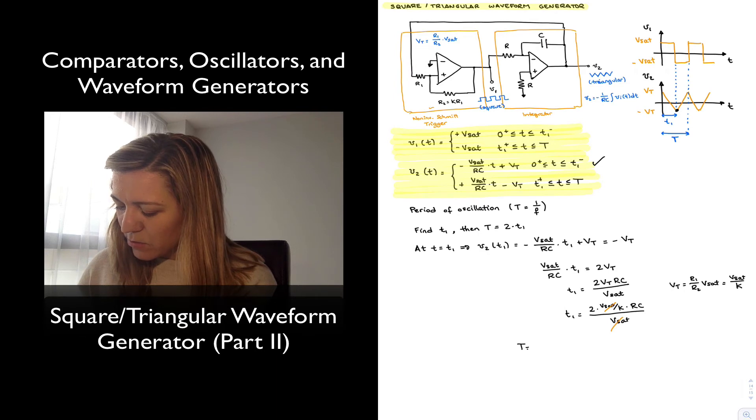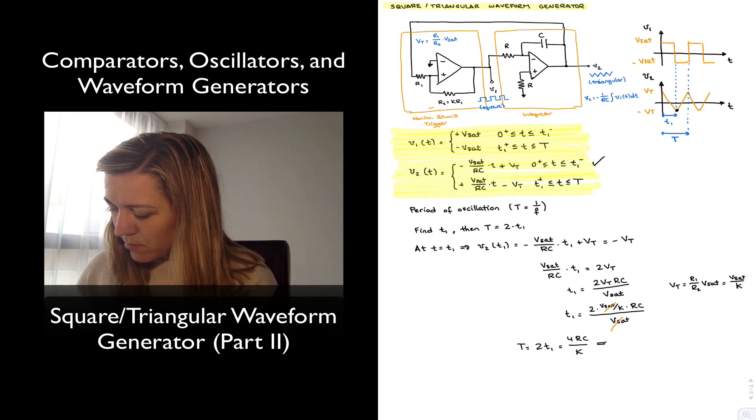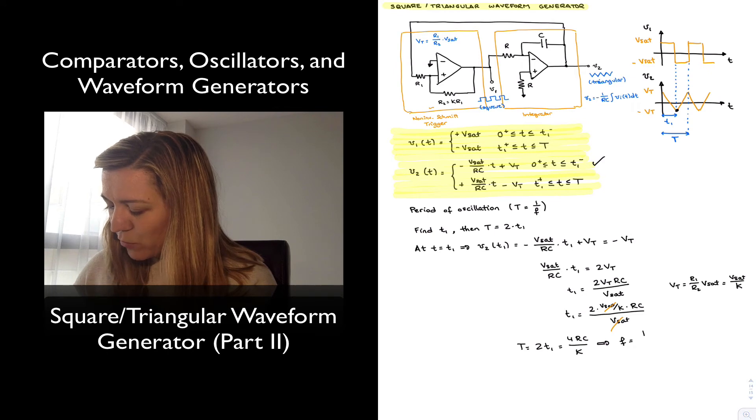My period then is equal to 2 times T1, so it's 4 RC divided by K, or equivalently, my frequency is 1 over the period, so K divided by 4 times RC.